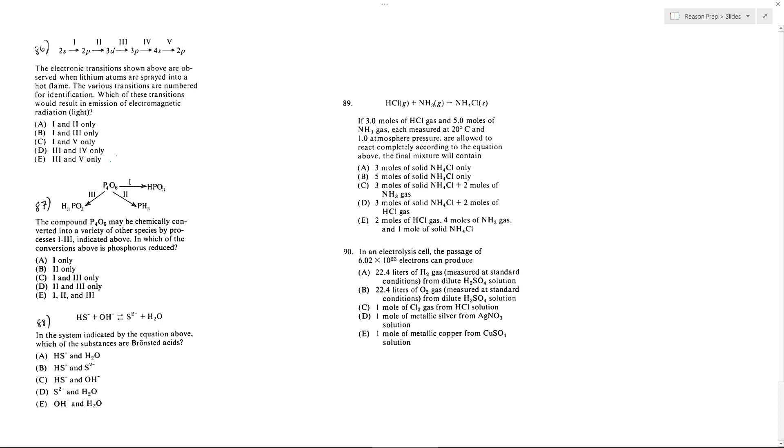86. We want to know for this one which transition would result in the emission of electromagnetic radiation or light. This is going to happen when you go from a higher energy level to a lower energy level. So we need to see which of these go from a higher to a lower level.